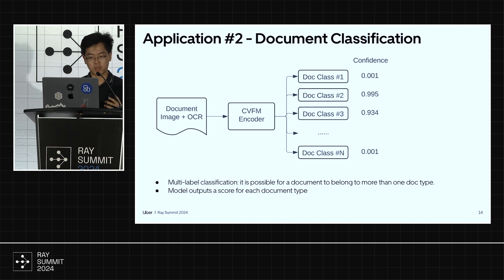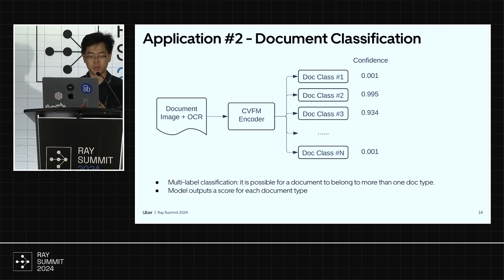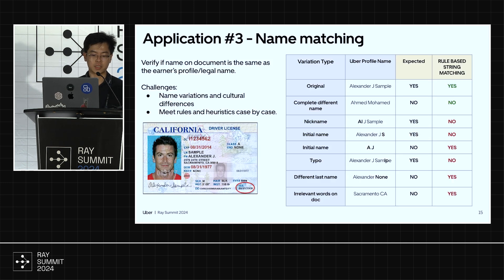The second application is document classification. One reason we include an encoder in our architecture is that once pre-trained, we can use both the encoder-decoder architecture and the encoder-only part for document classification. We show a multi-label classification example where a document comes in, the encoder runs classification, and tells us it falls into multiple classes — for example class three and class two — giving an independent score for each document type.